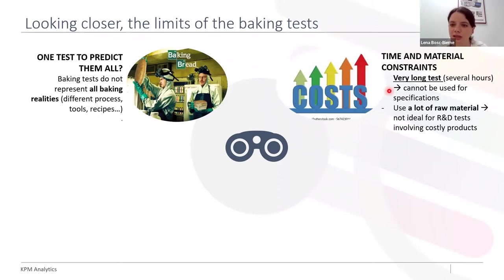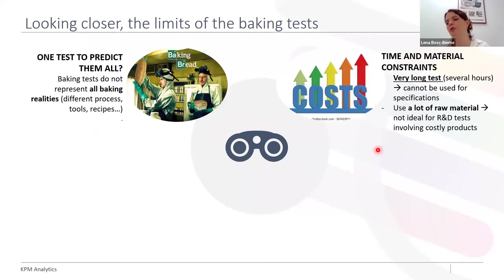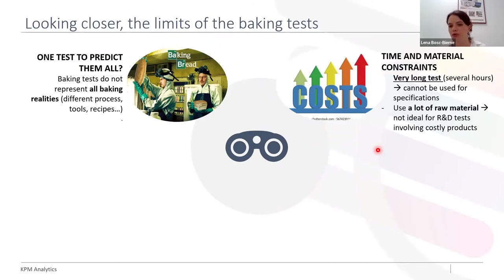Secondly, this is a test that takes a lot of time — generally several hours — so it cannot be used to build specifications. If you have a truck waiting outside full of flour, you can't tell the driver to wait while you make your baking test. You have to accept and then make the test. Also, you will need to use a lot of products — a lot of flour and ingredients — and in the context of an R&D trial with costly products, this is not ideal.